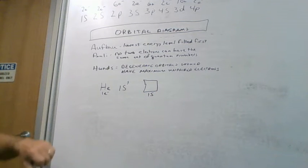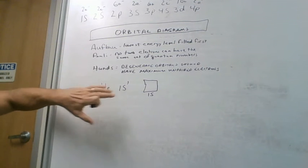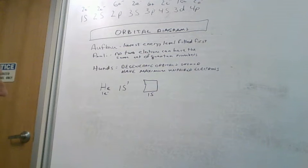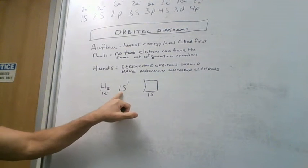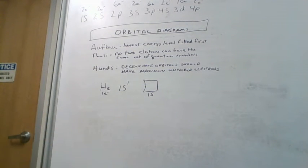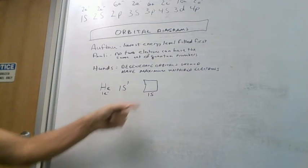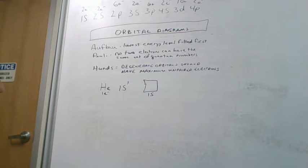There are a couple rules we need to follow when we're drawing these orbital diagrams. One is the Aufbau principle, which was the same one that we used when doing our electronic configuration: the lowest energy level is filled first. So this one electron from helium is going to go in a 1s orbital because that's the lowest energy level.